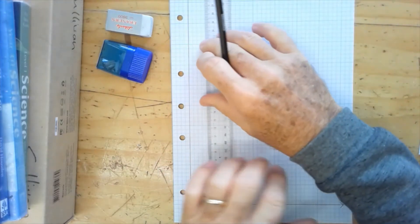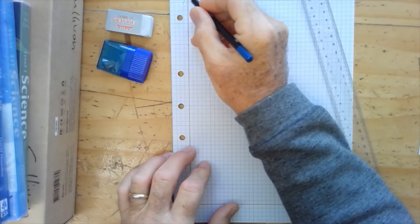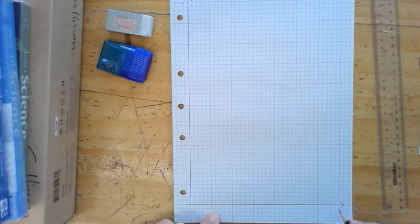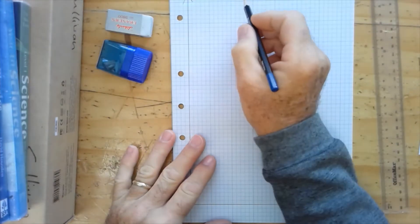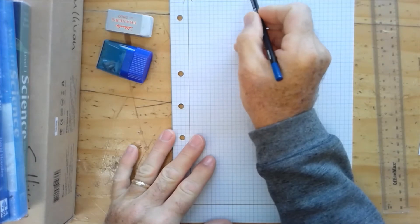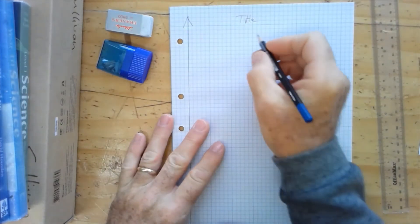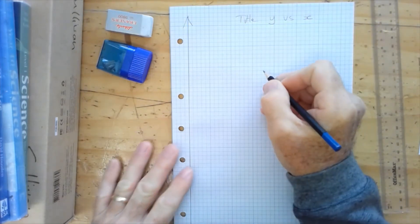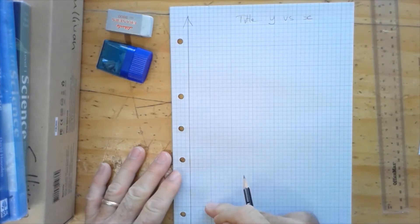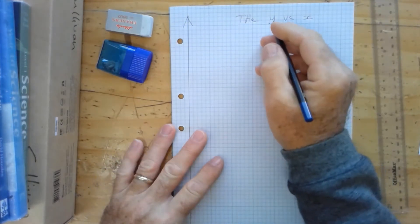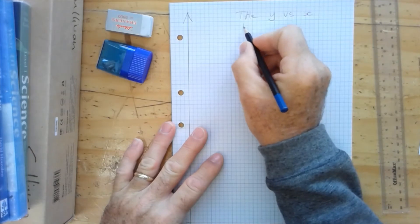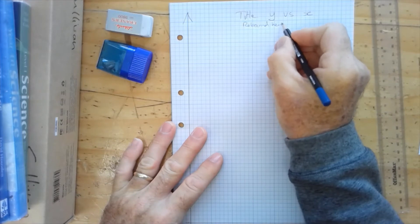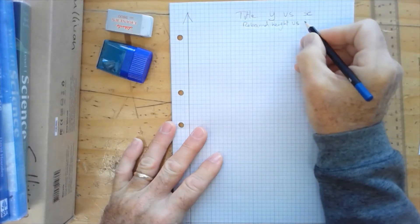And I like to put arrows on the end of these to show the direction of the increasing value. We've got that there, and right at the top here, we're going to have a title. And the title is going to be y versus x. That's the dependent variable versus the independent variable. In our case, it's going to be rebound height, that's our dependent variable, rebound height versus drop height.